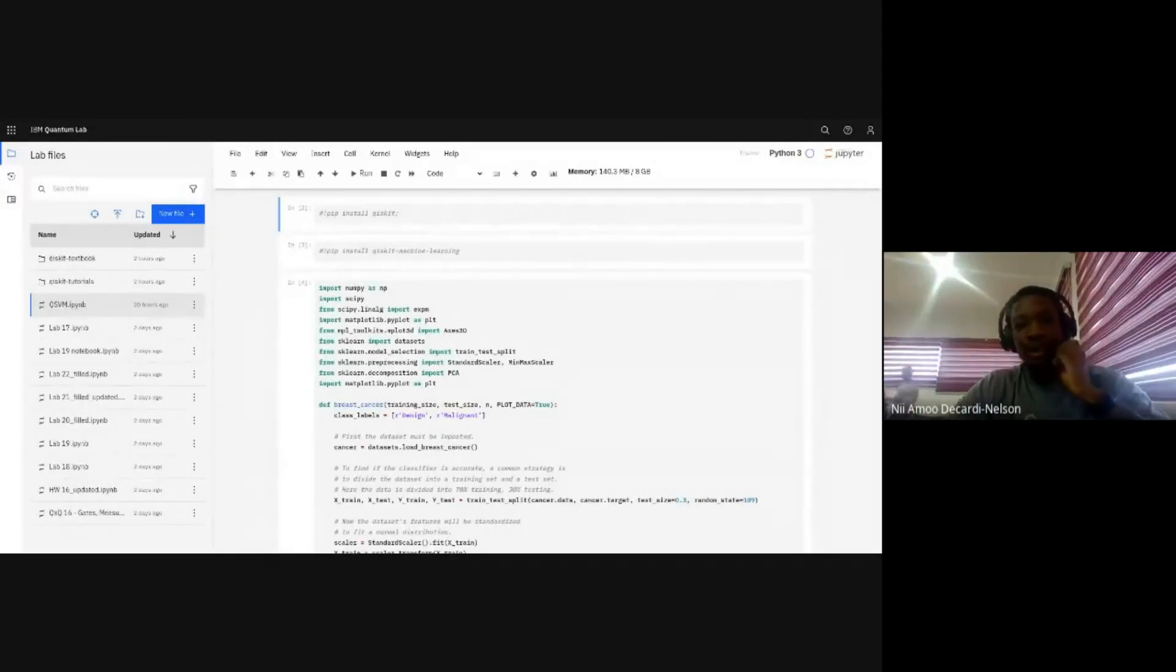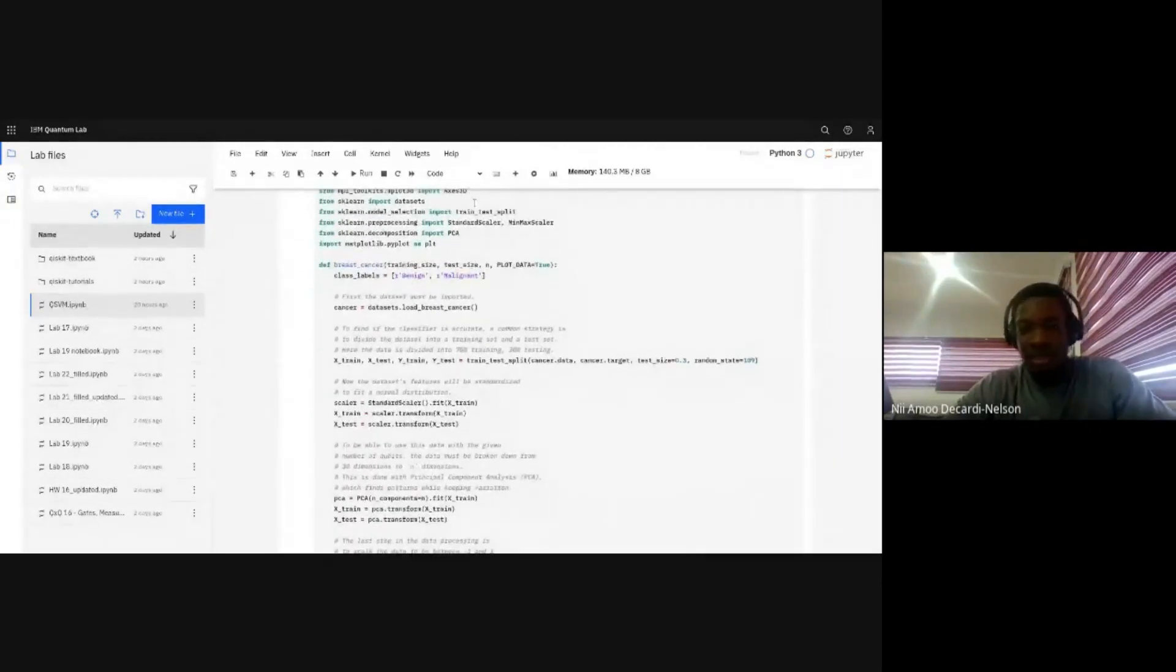So all we have here is IBM's quantum lab, and I'll be using Qiskit, which is their quantum computing library in Python. To demonstrate how the quantum support vector machine will work, I'll be using the breast cancer data set after importing a number of things. The main elements in the data set is that you have two classes, either benign cancer cells or malignant cancer cells. Benign ones are ones that are not harmful, and malignant ones are the ones that can be harmful to you.